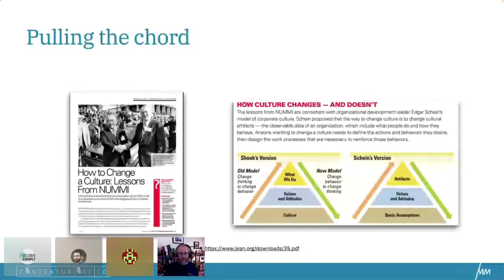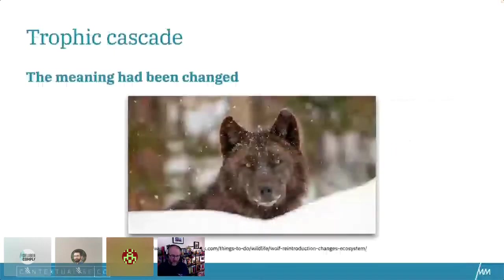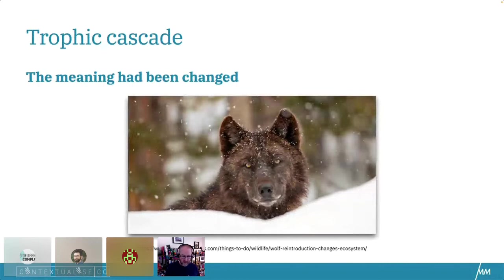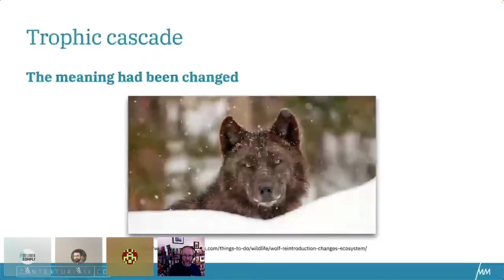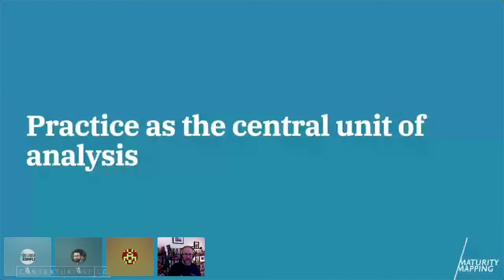Instead of taking culture through values and attitudes to what we do — the old model — it was very much about doing, changing the practice, which then evolved new values and attitudes and created a different culture. Interestingly, GM's efforts to replicate NUMMI in its own plants failed for many, many years. The main predator in that environment changed — it was no longer managed by GM plant managers but by Toyota managers, who changed the meaning of work significantly. It was no longer about quantity; it was now about quality.